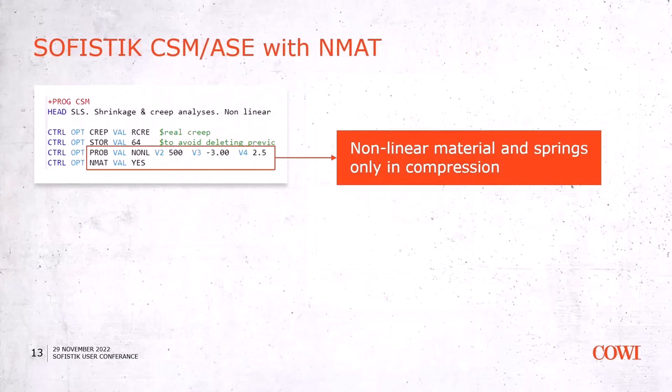The main script is done in CSM. CSM prepares the scripts for ASE, which is the real engine that calculates and solves the analysis. The main points in the script related to this non-linear analysis: we activate the non-linear analysis here, and in the control options, the non-linear material. We also define the number of iterations. The convergence criterion is defined here as 3 kN in this example — so we allow an unbalanced force of 3 kN at each node.